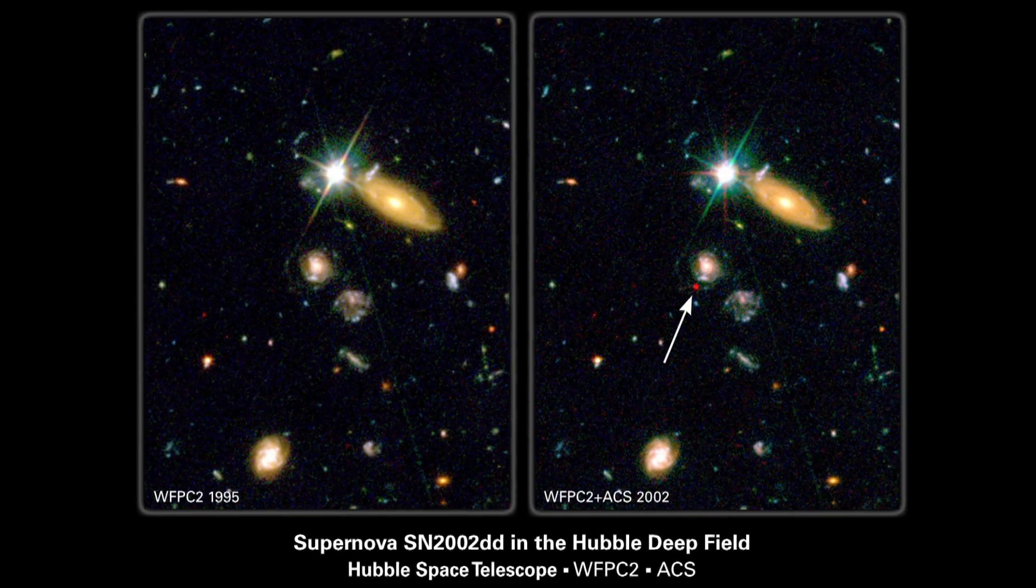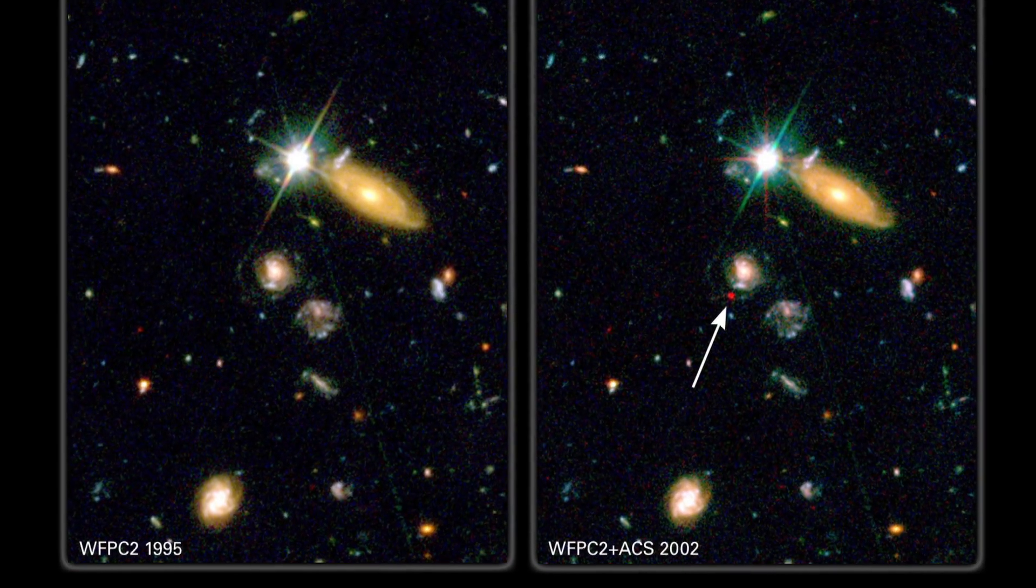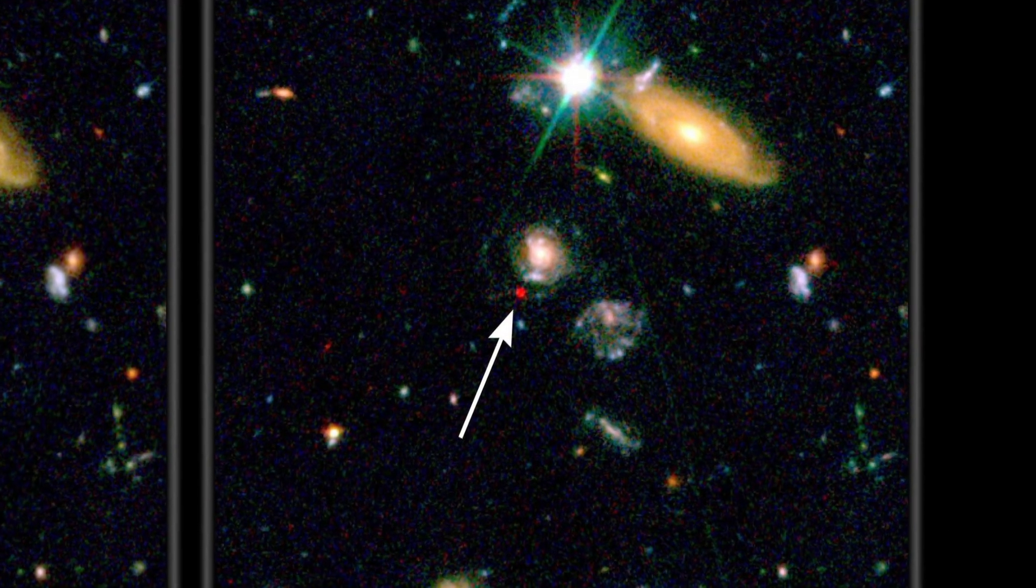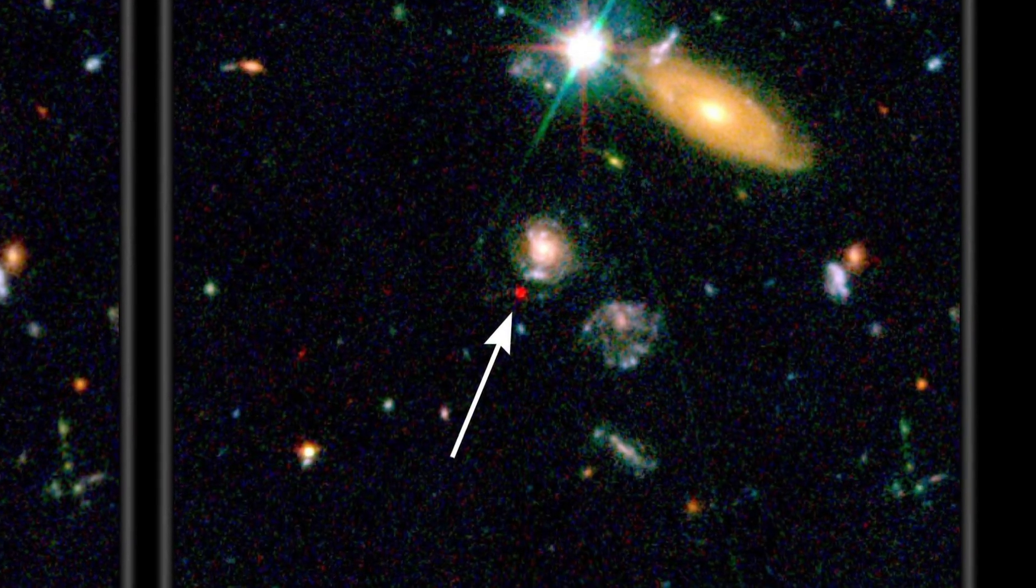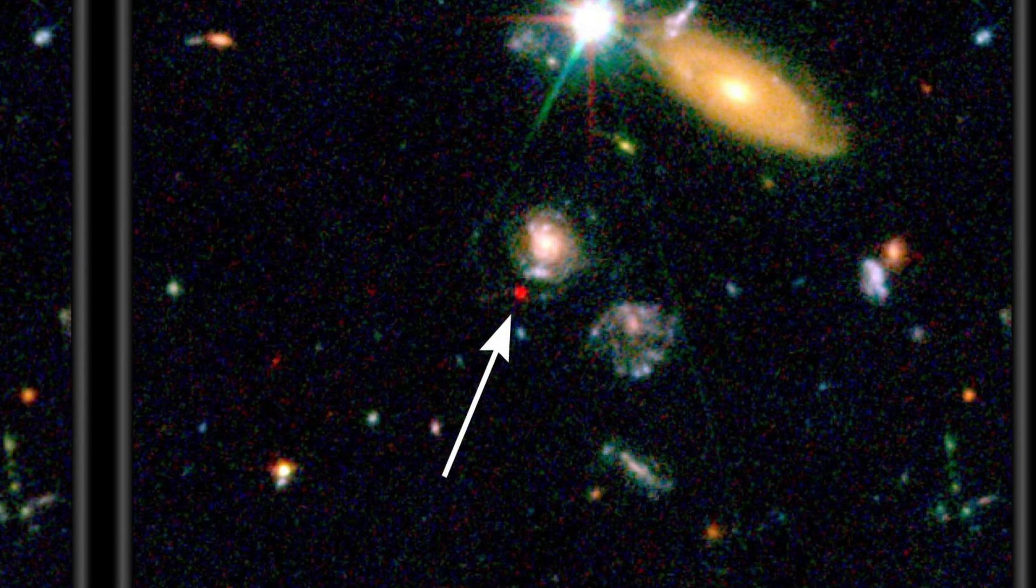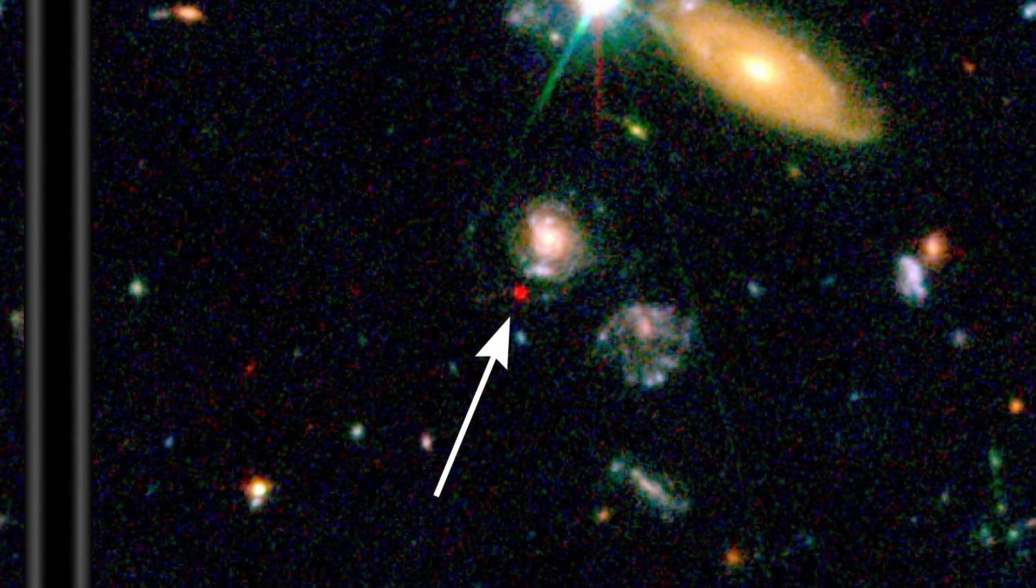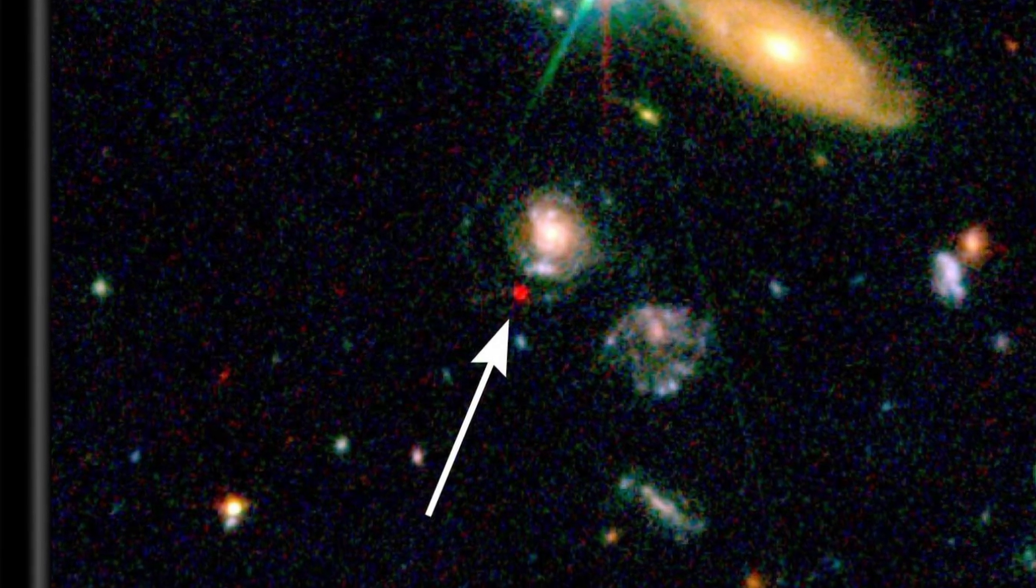When we study those supernovae, we find a surprising result. They are 25% less bright than expected. This fact shows that the distance their light has travelled to arrive with us is greater than we thought.